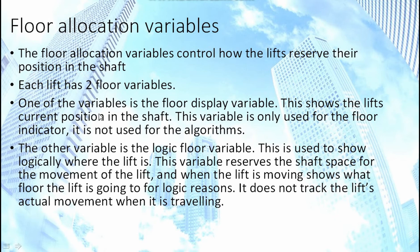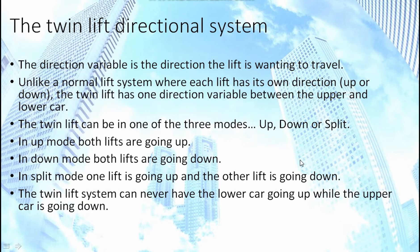The floor allocation variables control how the lifts reserve a position in the shaft. For each lift there are two variables: the display variable, which shows the lift's actual physical position on the display; and the logic variable, also called the reserve variable, which logically shows where the lift is going. The important difference is that the logic variable at all times says where the lift is for the purpose of system logic — it doesn't need to literally count up as the lift moves — and it also reserves shaft space as the lift moves.